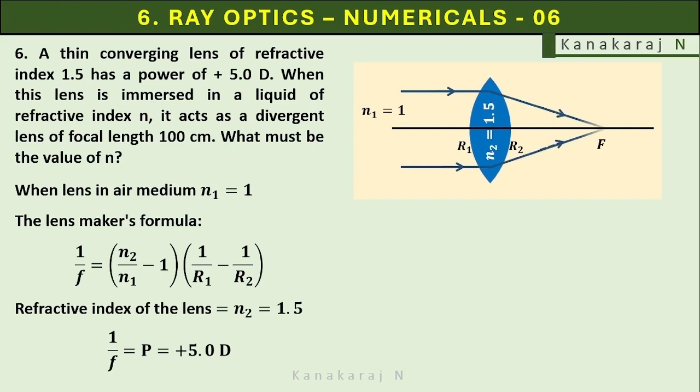It acts as a convergent lens. In the place of 1 by f, let us write plus 5 and in the place of n2, let us write 1.5. In the place of n1, let us write 1. Thereby, let us find 1 upon r1 minus 1 upon r2.